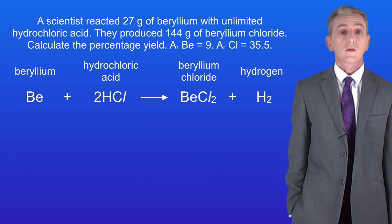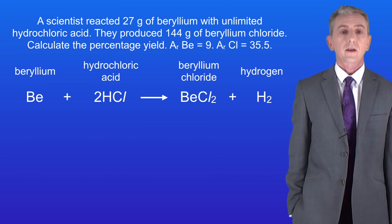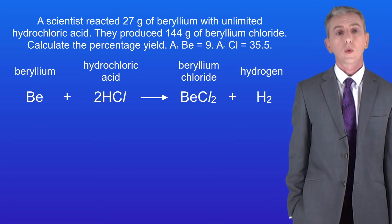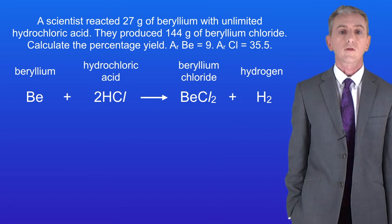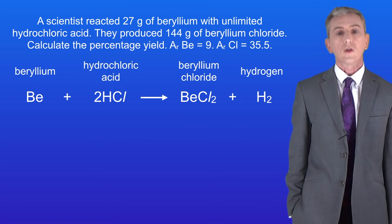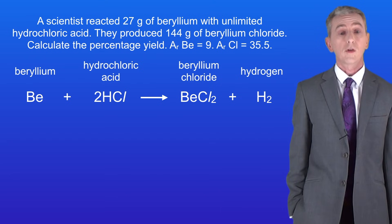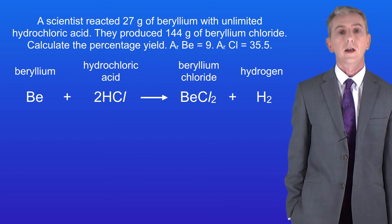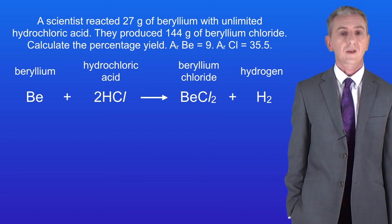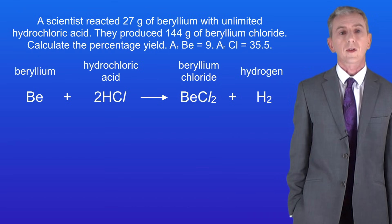Here's another question for you to try. A scientist reacted 27 grams of beryllium with unlimited hydrochloric acid. They produced 144 grams of beryllium chloride. Calculate the percentage yield. Pause the video and try this one yourself.